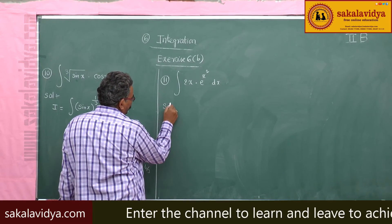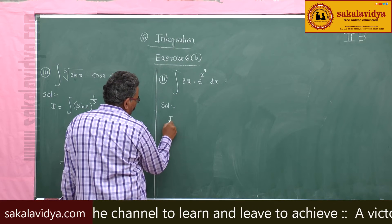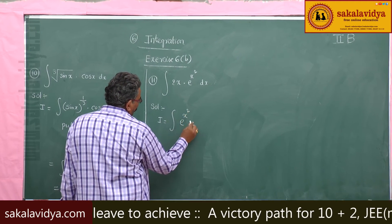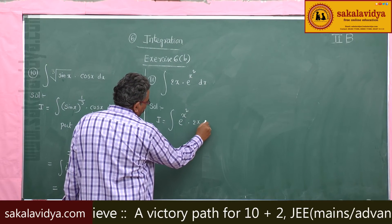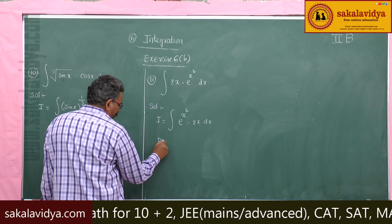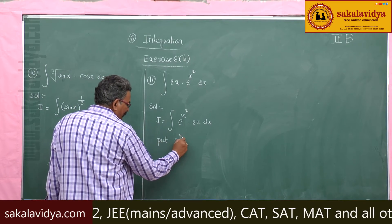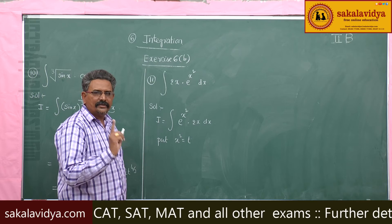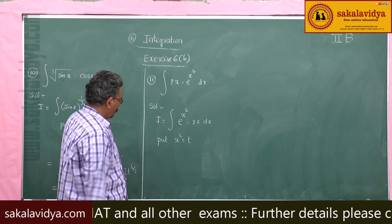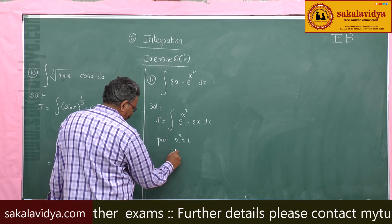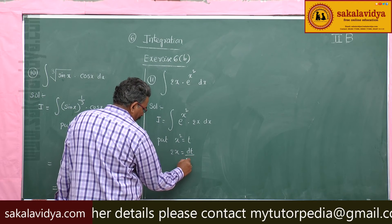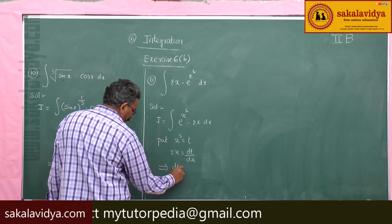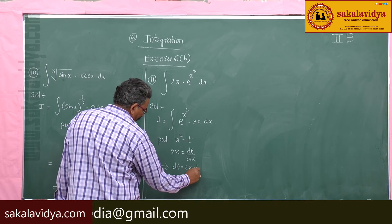Let I equal to integral of e to the power x square into 2x dx. Put x square equal to t. Differentiating both sides, this gives 2x equal to dt by dx, and therefore dt equals 2x dx.